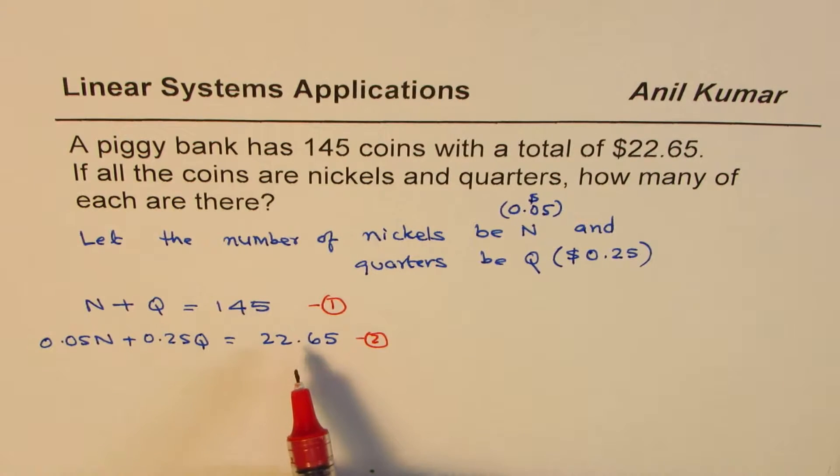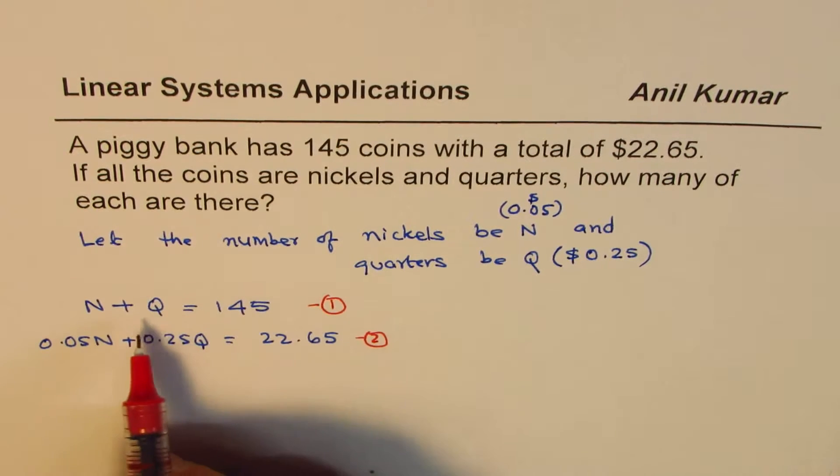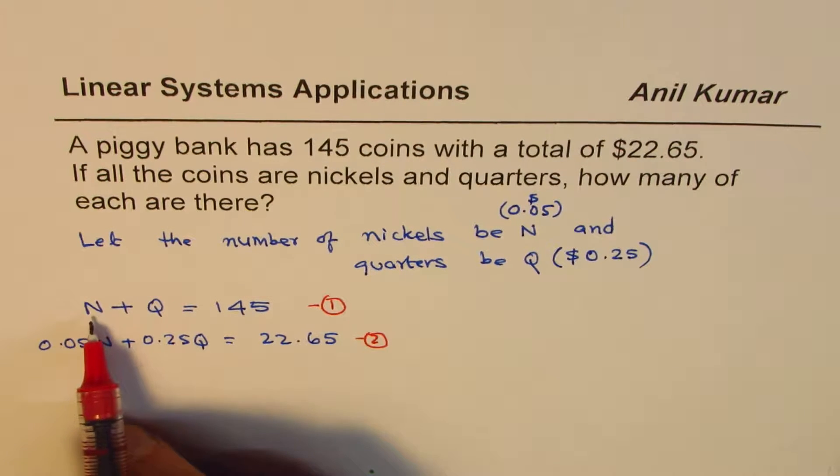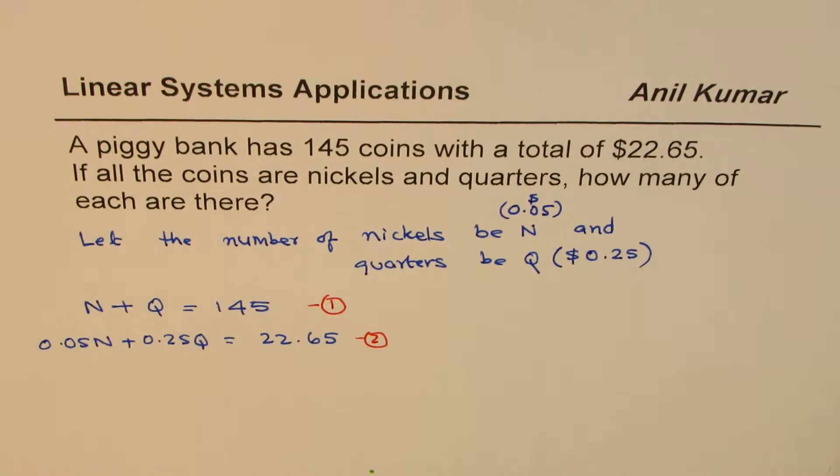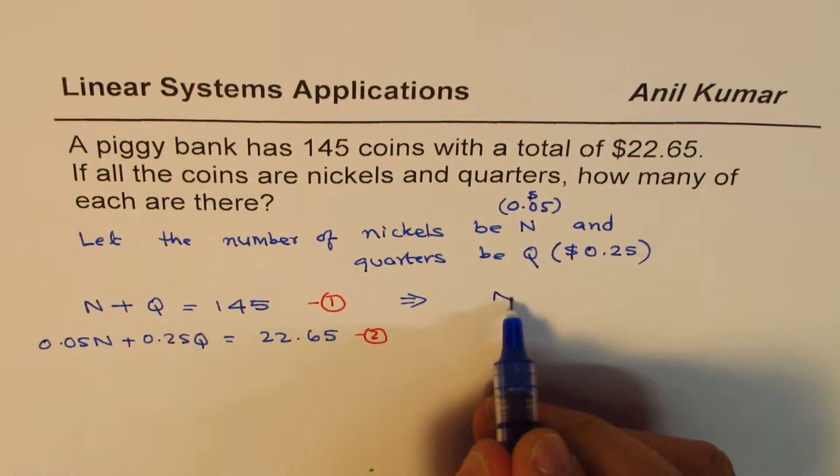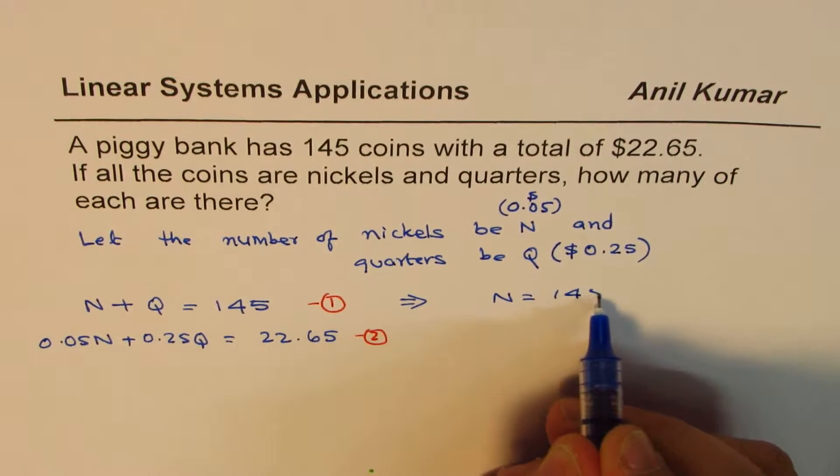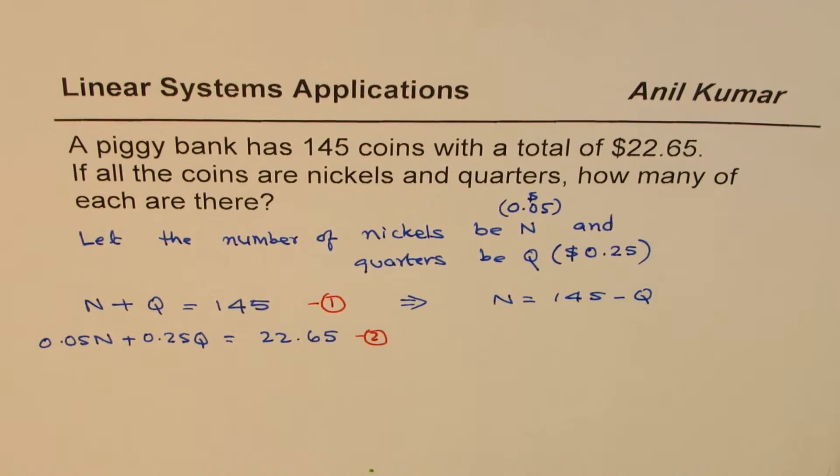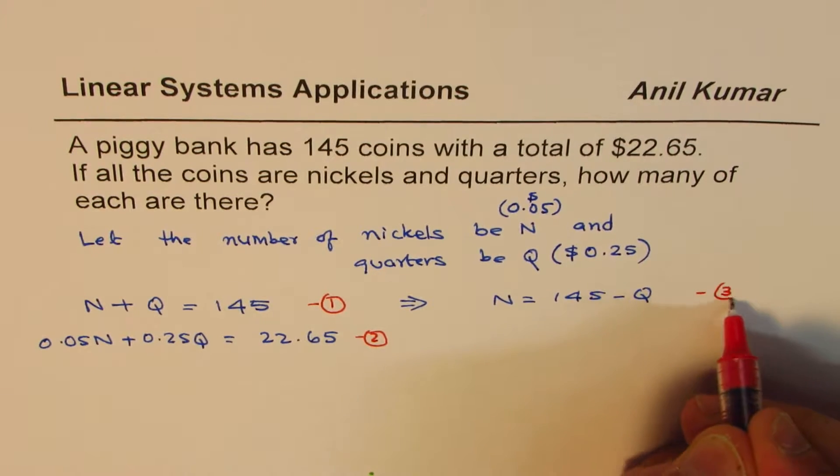Once we have these two equations, we can do substitution or elimination to solve. Now here, it is good to write one variable in terms of the other. So from equation number 1, we can actually rewrite and write nickels equals to 145 minus Q. So we got nickels in terms of quarters, we'll call this as equation number 3.